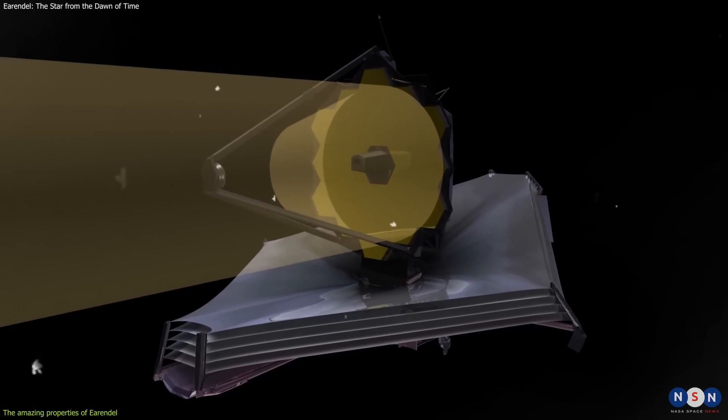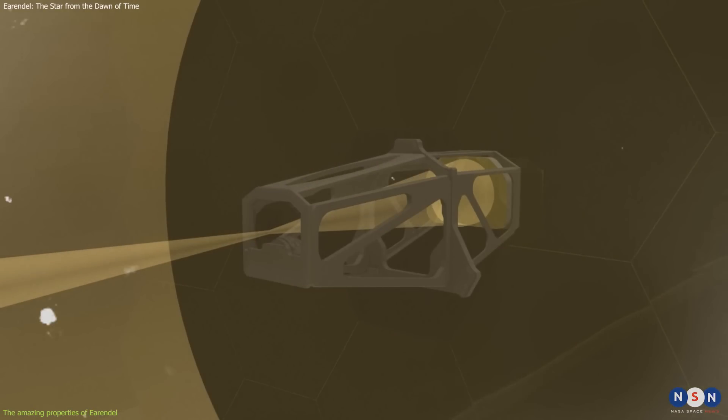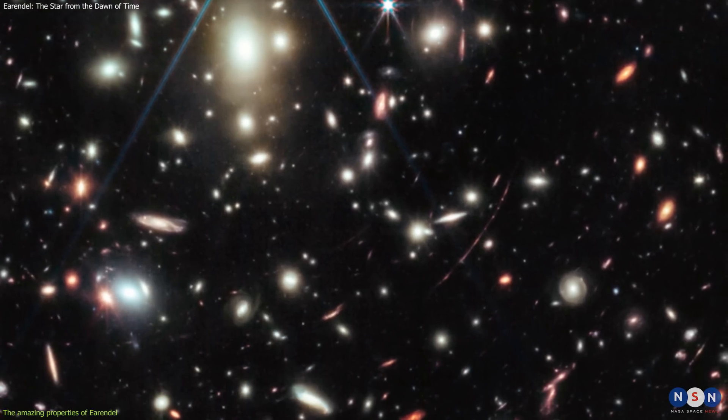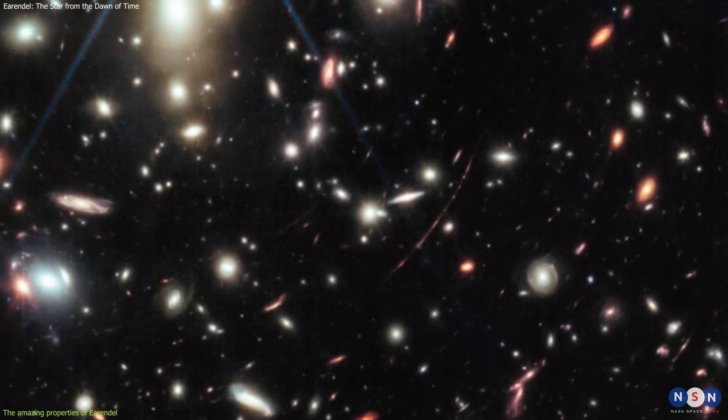The NIRCAM instrument can detect very faint infrared light that is invisible to human eyes. It has a very high resolution and sensitivity, which allows it to capture detailed images of distant objects like this star.